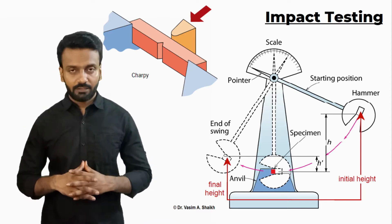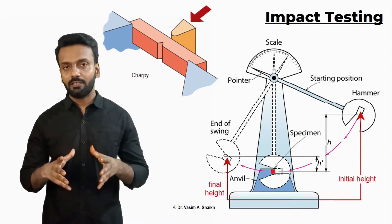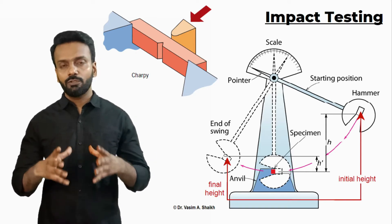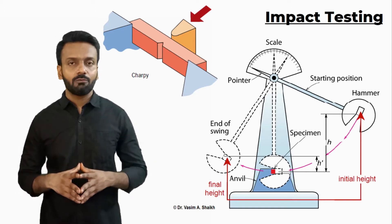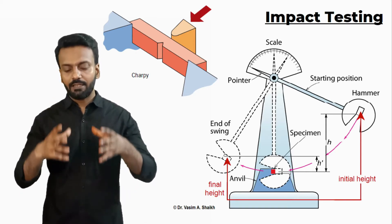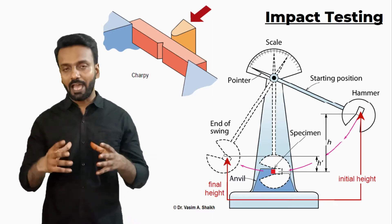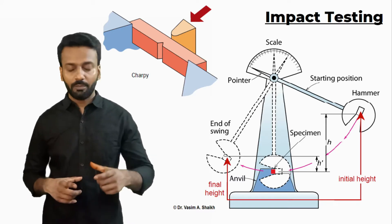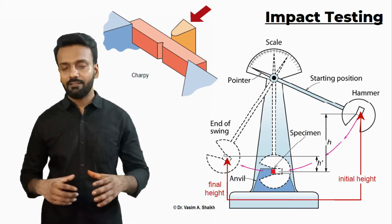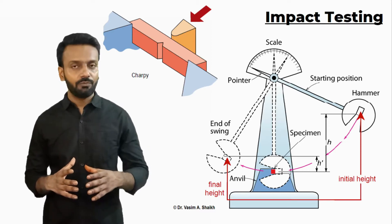In the impact testing, you have a standard setup and a standard specimen. Here, what we see is a standard apparatus where you have a hammer. The material is located in an anvil and then it is struck with the help of a hammer.